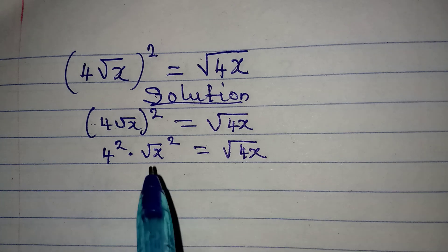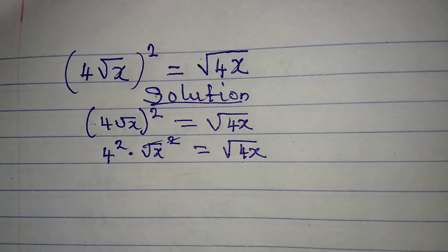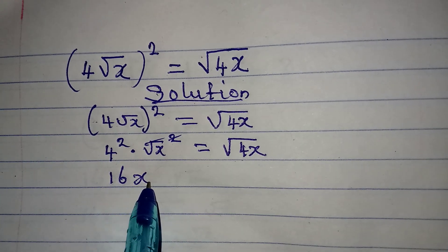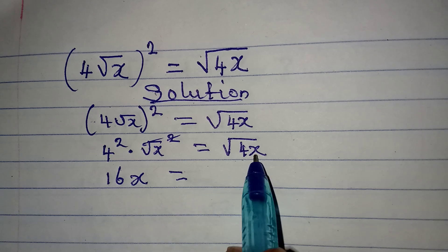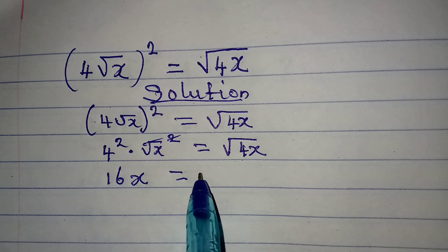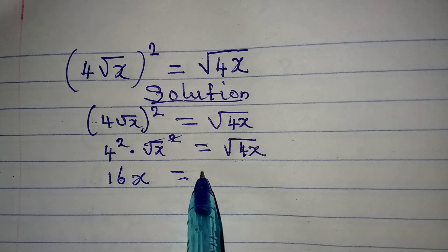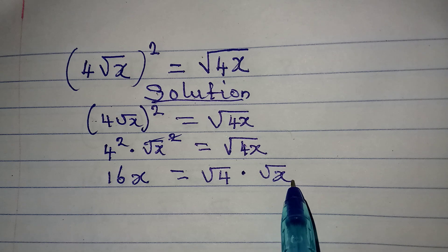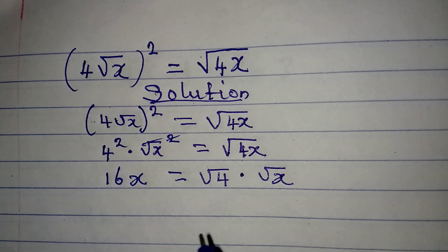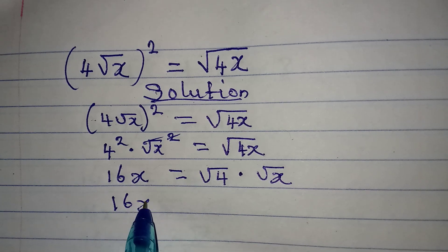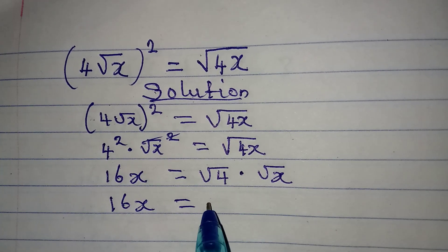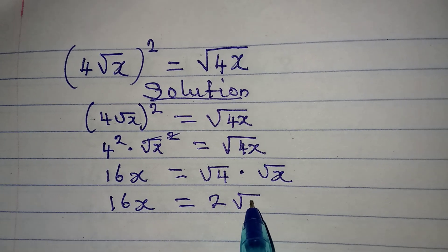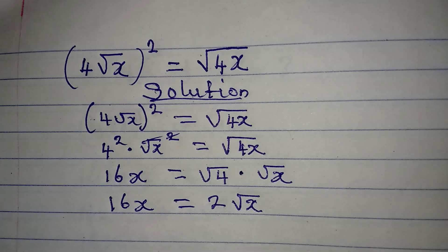From here, this can cancel, and 4 squared is 16. Now we have 16x on the left side, which should equal the square root of 4 multiplied by the square root of x. These are the same thing, so 16x equals 2 times the square root of x.